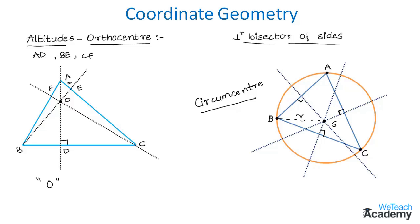Taking S as the center and R as the radius, we can draw a circle that passes through all three vertices of the triangle; this circle is named the circumcircle. This concludes the revision of basic concepts in coordinate geometry. Using these concepts we will proceed to discuss locus and transformation of axes in our upcoming videos. Stay tuned — thanks for watching, have a nice day!